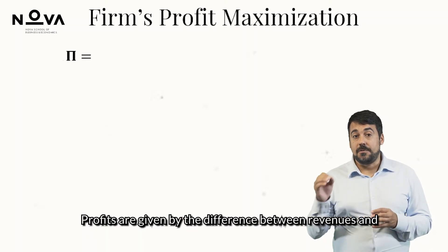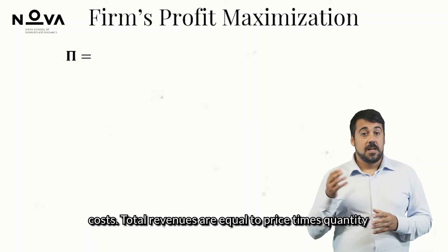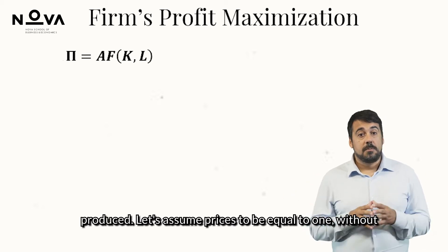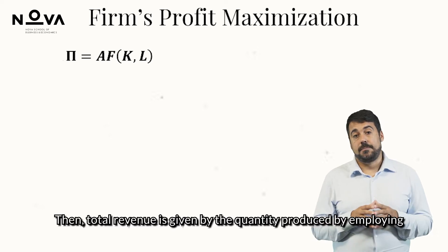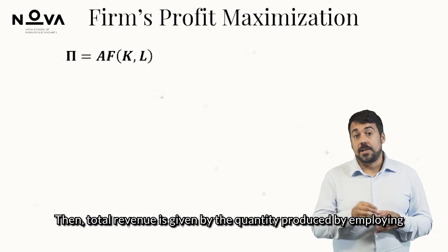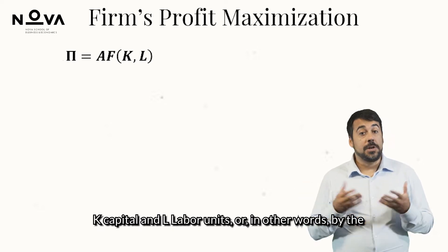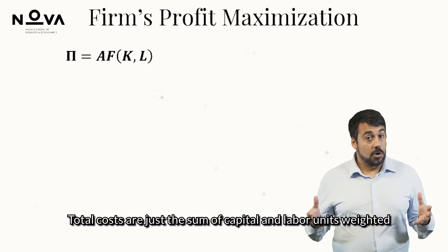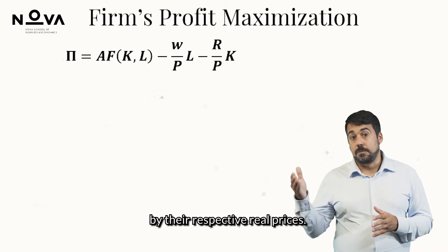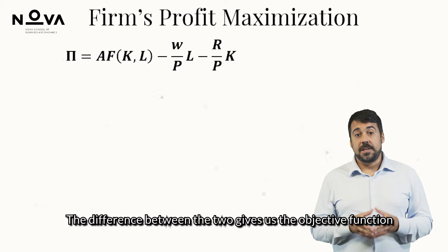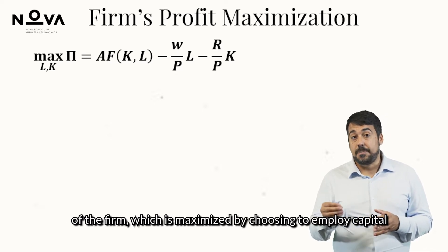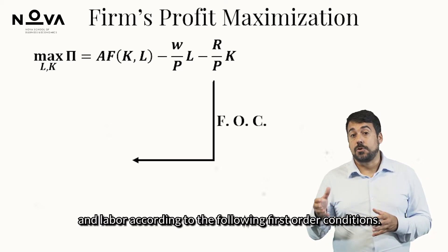Profits are given by the difference between revenues and costs. Total revenues are equal to price times quantity produced. Assuming price equal to one without loss of generality, total revenue is given by the quantity produced by employing K capital and L labor units — in other words, by the production function. Total costs are the sum of capital and labor units weighted by their respective real prices. The difference gives us the firm's objective function.